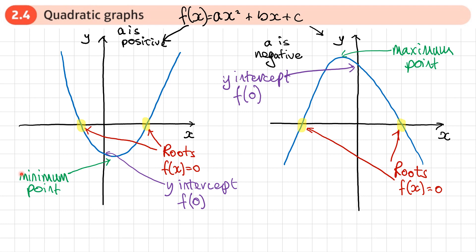We also need to know the minimum point of a U-shaped quadratic, or the maximum point of an N-shaped quadratic. We can work this out once we've written the function in completed-the-square form. For the y-intercept, we replace x with 0 and find f(0) in both cases.